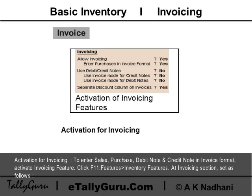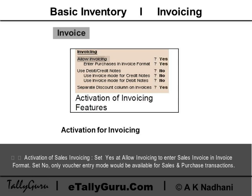To activate the invoicing feature, click F11 Features, then Inventory Features. At the invoicing section, set as follows: for activation of sales invoicing, set 'Yes' at 'Allow Invoicing' to enter sales invoices in invoice format. If set to 'No', only voucher entry mode would be available for sales and purchase transactions.